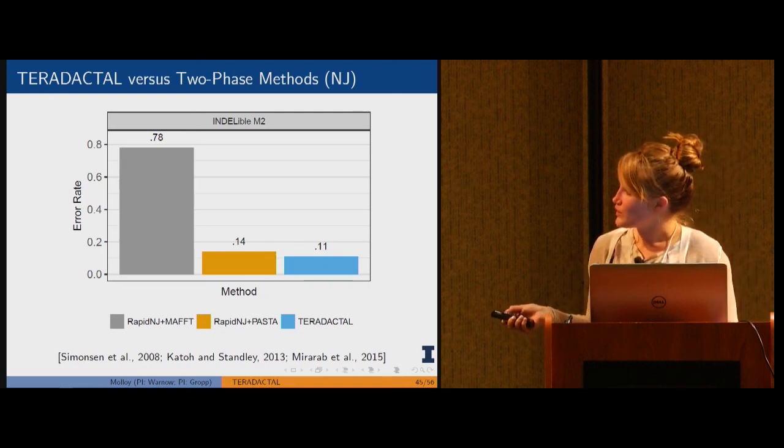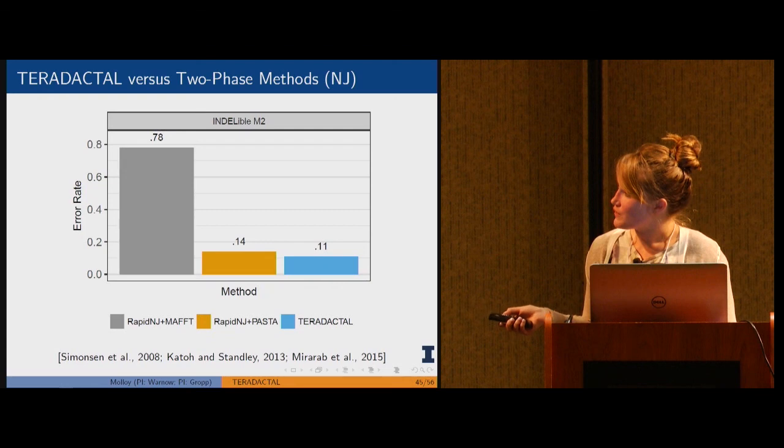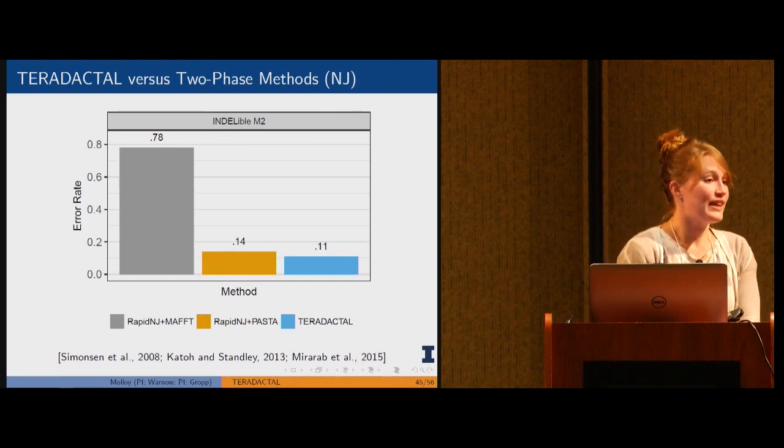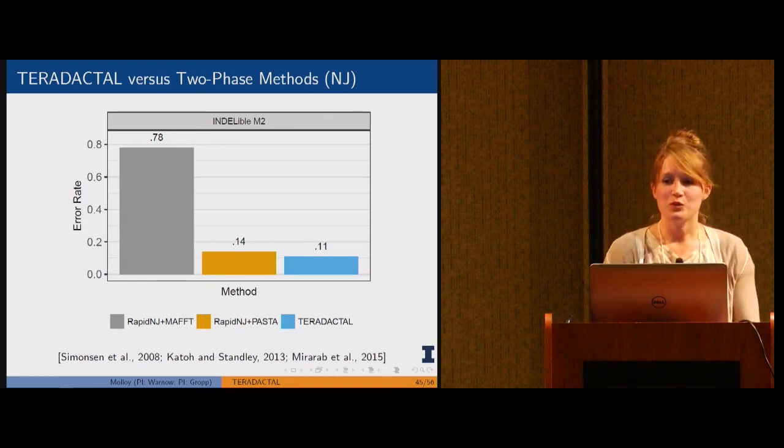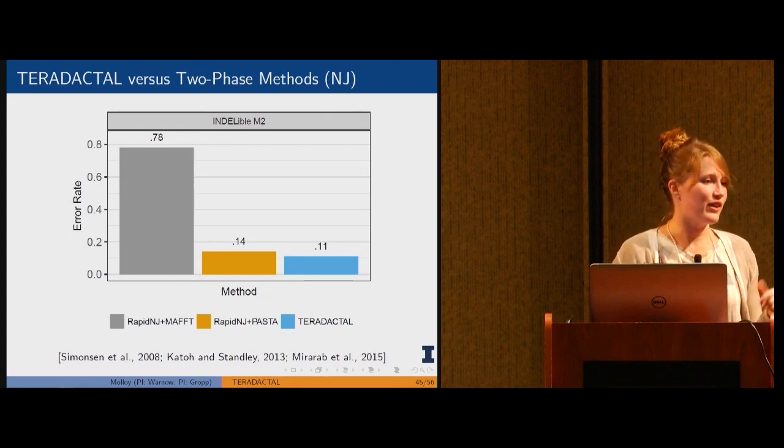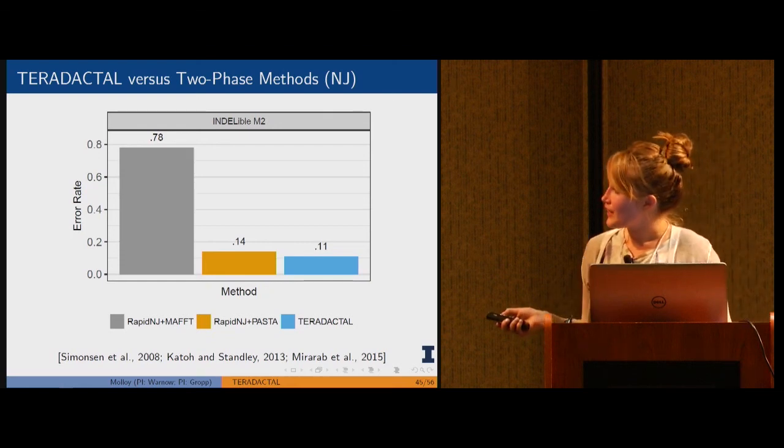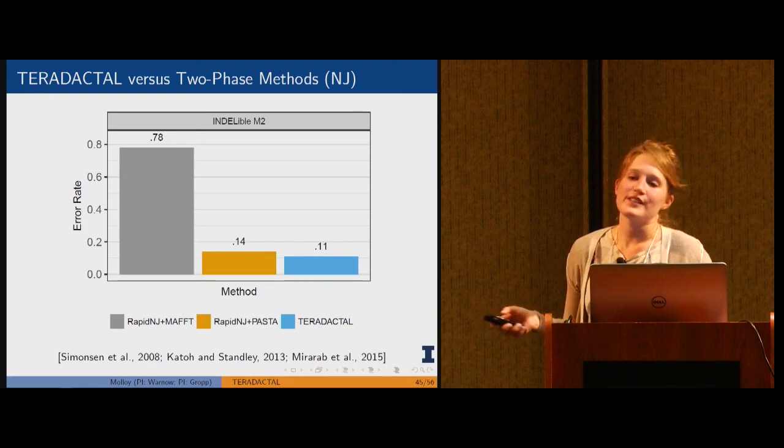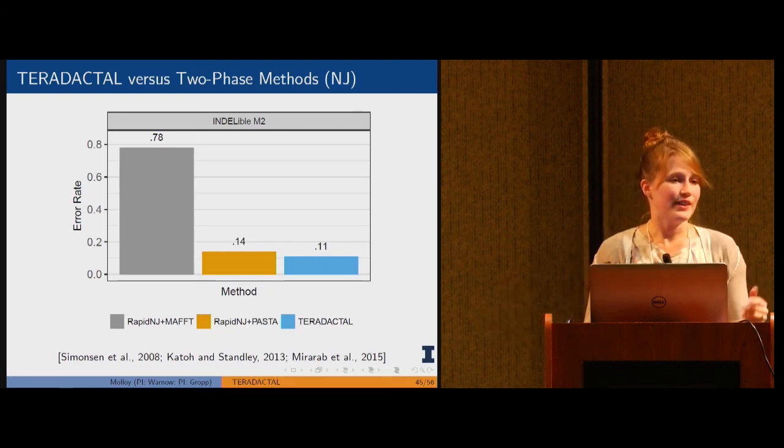This is why we didn't want to have to compute a multiple sequence alignment, because PASTA, which is the only method where the tree is very comparable to pterodactyl, actually requires estimating a maximum likelihood tree. It uses FastTree which was that tool that was shared memory parallel and couldn't run on large n. Even though pterodactyl is very similar to this method, although slightly better, we wouldn't really want to do this in practice because it would require running a method that wouldn't scale.